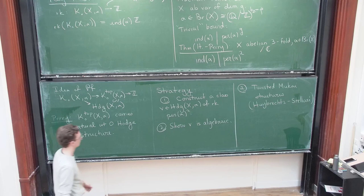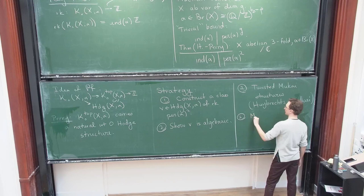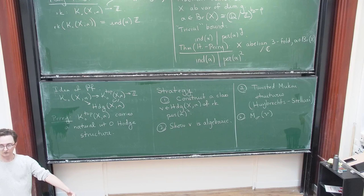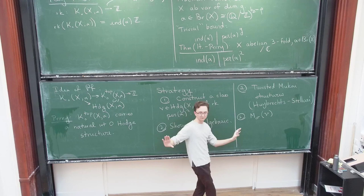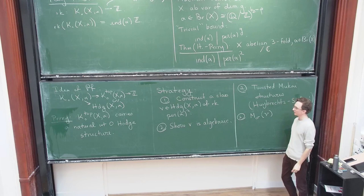So once you construct this class, right, the goal is to show that it comes from algebraic K-theory. And what you do is you can consider, what you're going to do is you're going to consider a moduli space of stable objects of class V. And it's a funny thing. You write down this moduli space, and all you have to do is show it's not empty. Right? Because if it's not empty, you're going to have one object of the right rank. That's all you need. So you have a funny problem, which is you have a moduli space of extremely high rank objects on an abelian threefold, and you just have to show it's not empty. That's it.